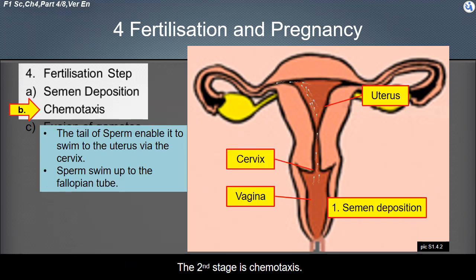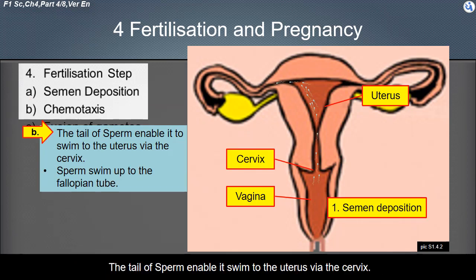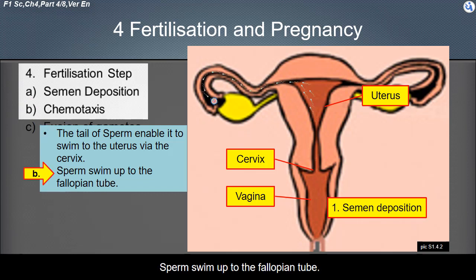The second stage is chemotaxis. The tail of the sperm enables it to swim to the uterus via the cervix. Sperm swim up to the fallopian tube.